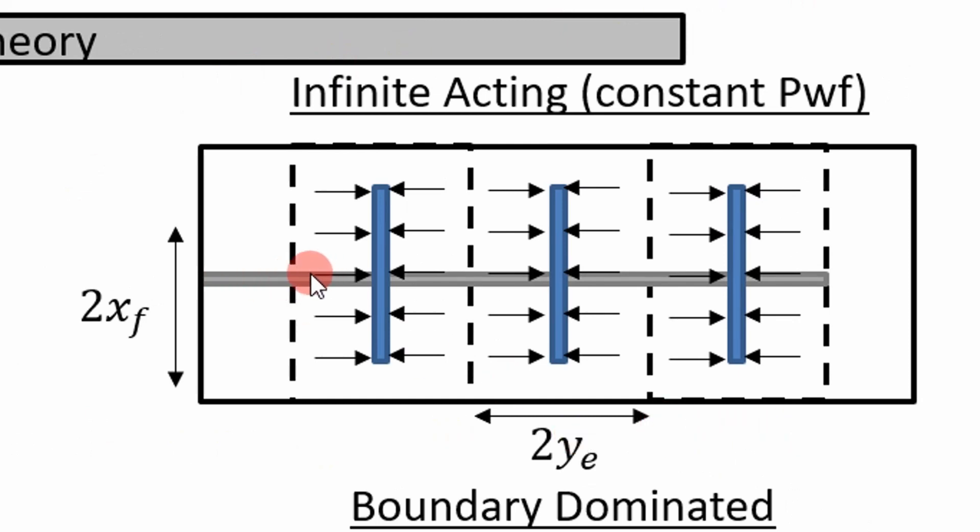assume that we're looking from the top down at a horizontal lateral right here, horizontal well. And you have fractures that are spaced evenly apart. Well, these fractures, when they first start to produce fluids, that fluid's going to flow perpendicular to the fracture, or at least we're assuming so, to simplify the analysis.